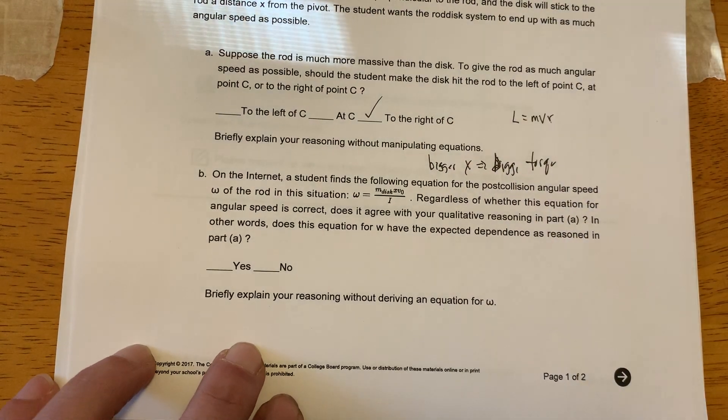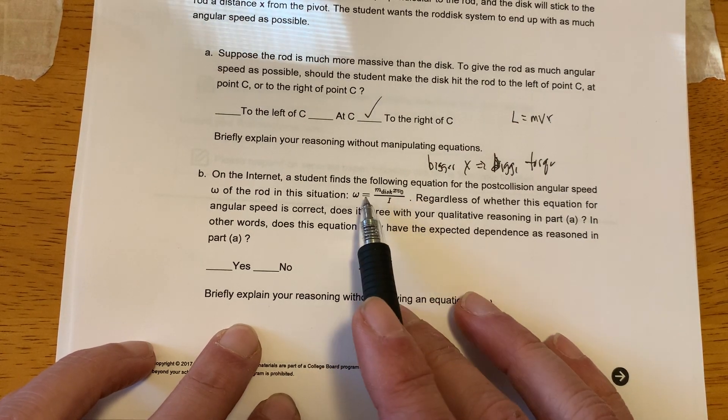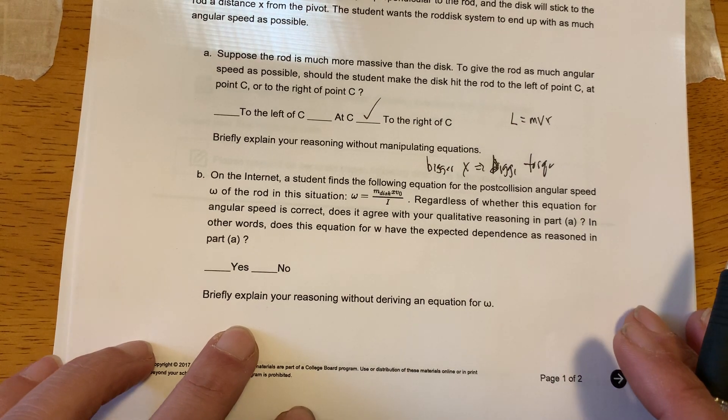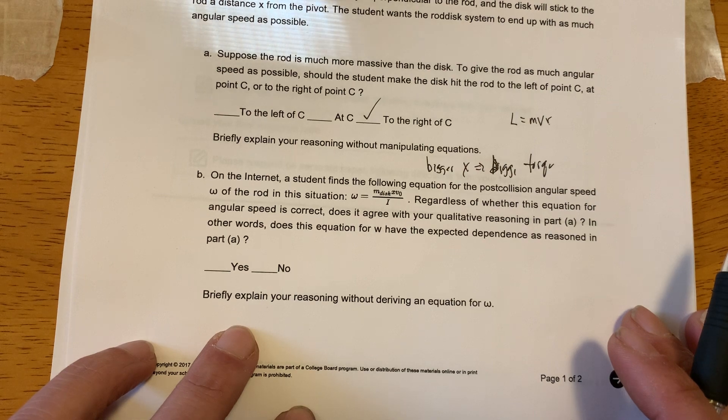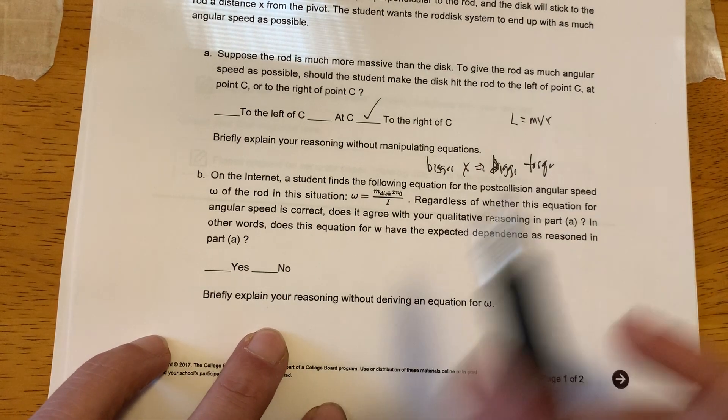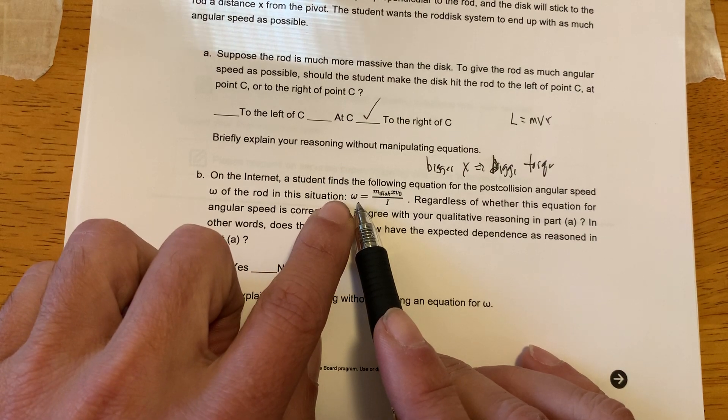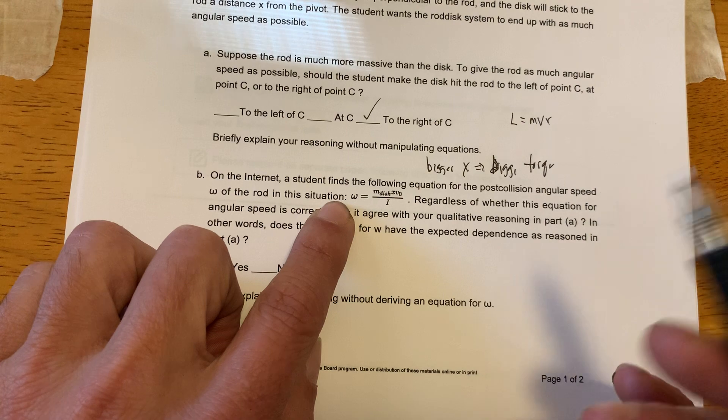Alright, part B. On the internet, a student finds the following equation. There it is right there. Regardless of whether it's correct, does it agree with your quantitative reasoning in part A? Okay. What did we say in part A?